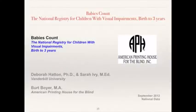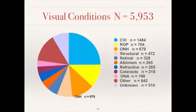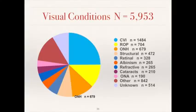In the Babies Count 2012 national data, 11% of the sample size had optic nerve hypoplasia. This makes it the third most leading cause of visual impairment in the newborn Birth to Three population in the United States, after cortical visual impairment and retinopathy of prematurity.